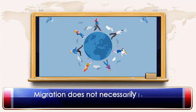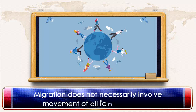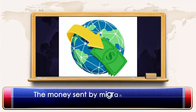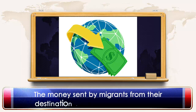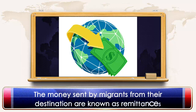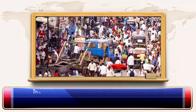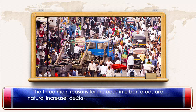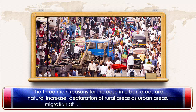Migration does not necessarily involve movement of all family members. The money sent by migrants from their destination is known as remittance. The three main reasons for increase in urban areas are: natural increase, declaration of rural areas as urban areas, and migration of people from rural to urban area.